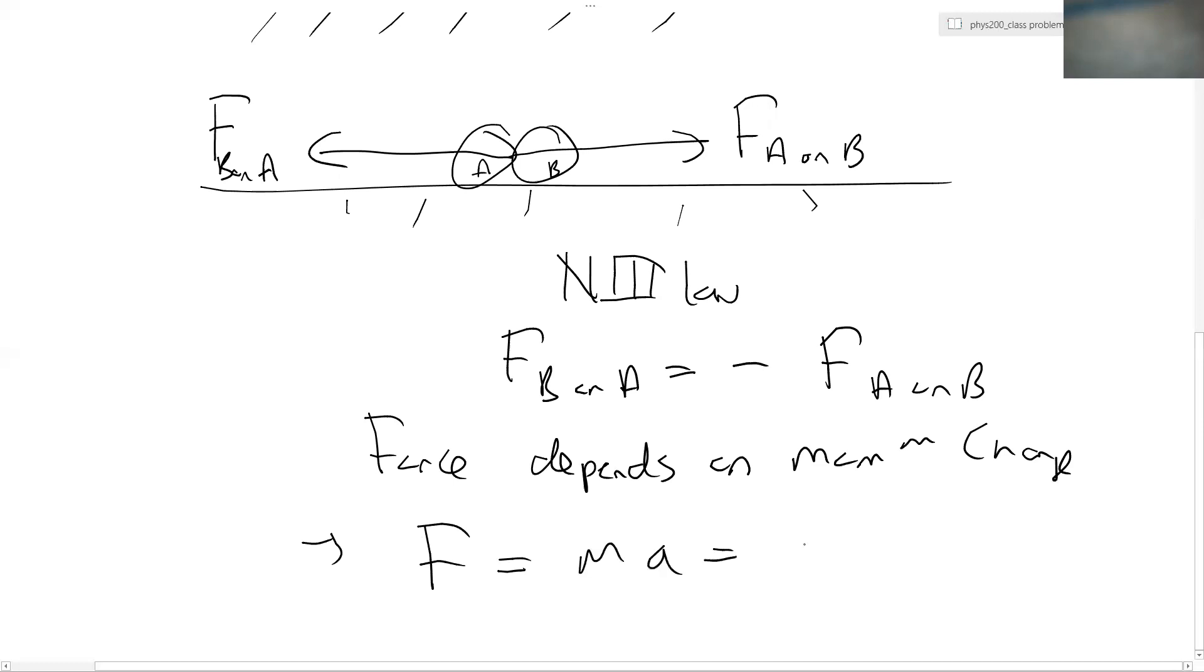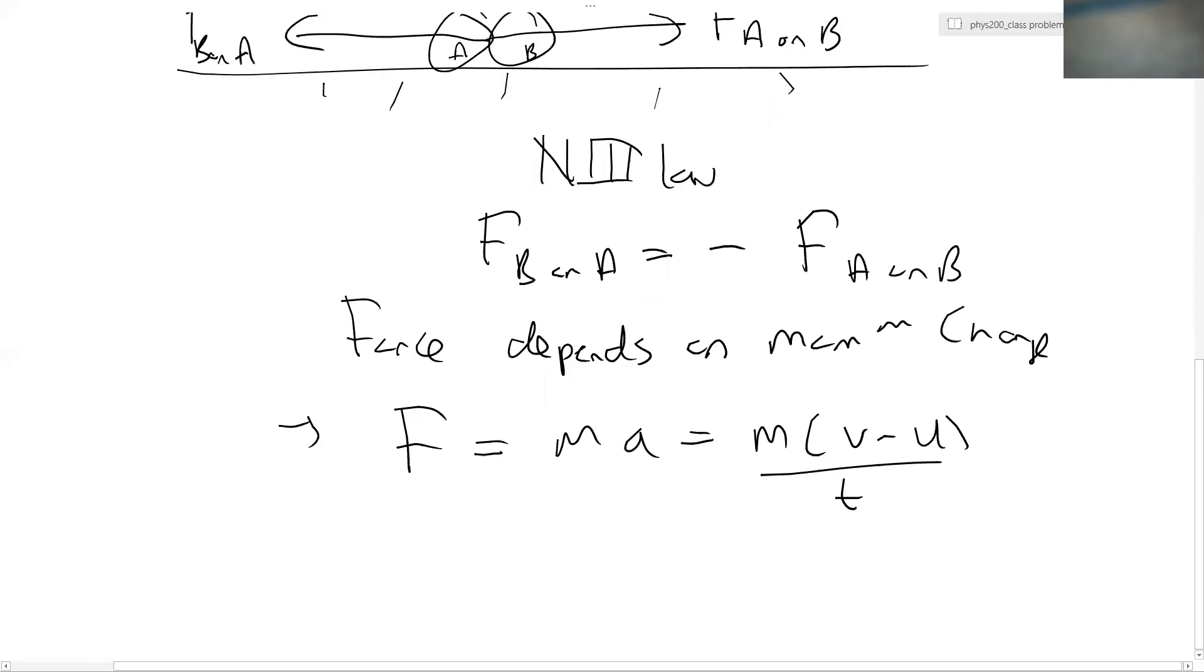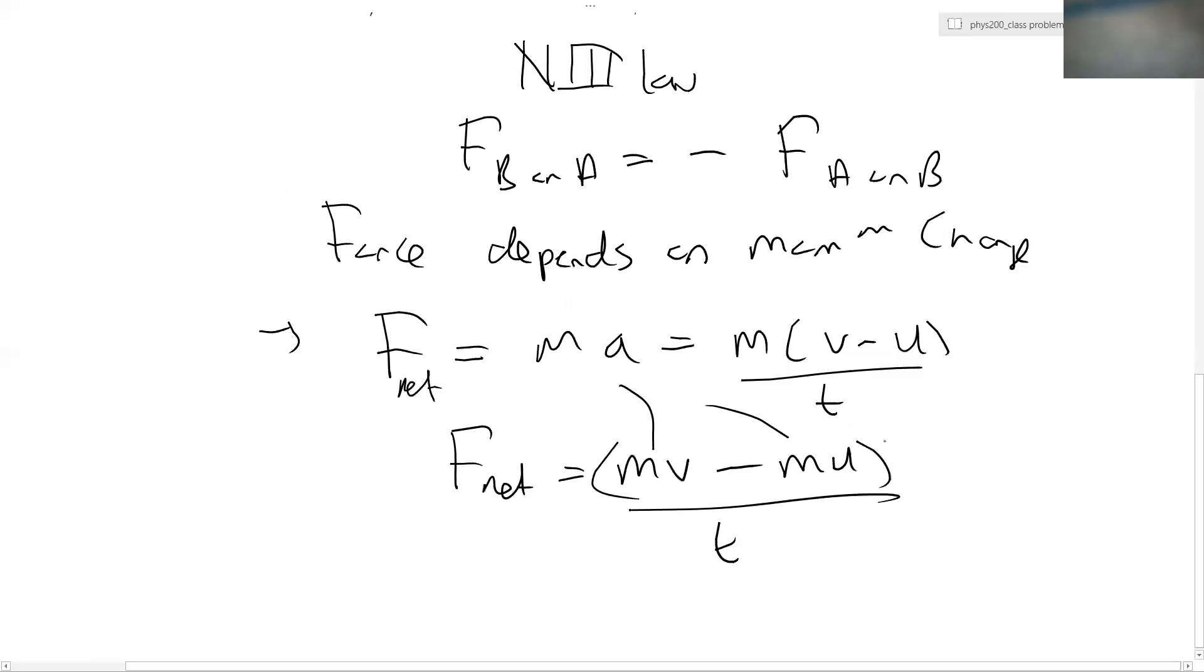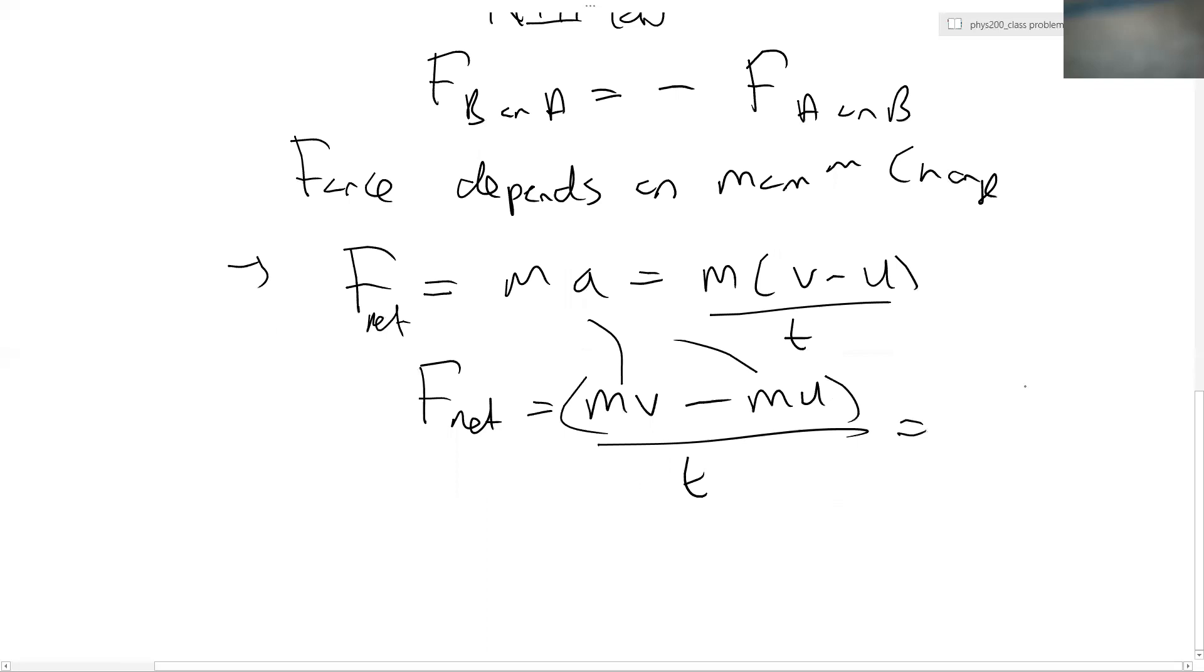a being the acceleration, then that's m into v minus u divided by t for force, net force. So that's F net equals mv minus mu over t. And each of these, these are the momentum, right? This is actually delta P over T. So force is changing momentum over time.